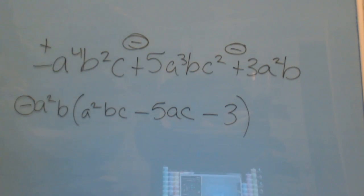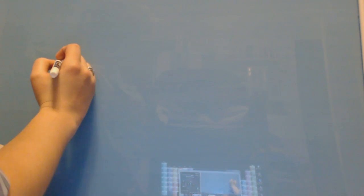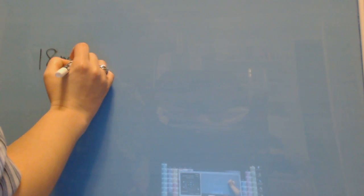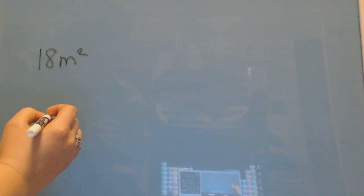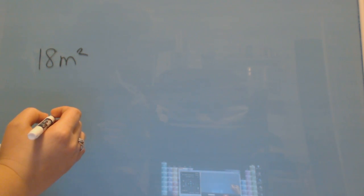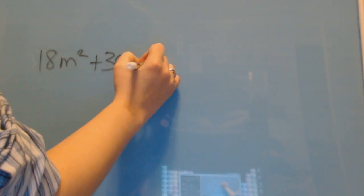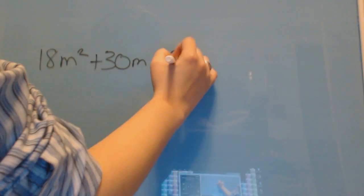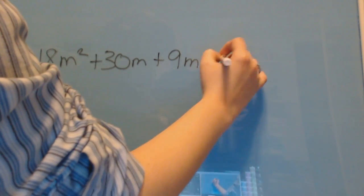So, moving on to one more problem. And this one is going to be the grouping, the factoring by grouping. Really super simple. We'll do 48. 48 looks pretty good to me. I'm happy with 48. So, 48 in section 5.4 says that it is 18m to the second. Plus 30m plus 9m plus 15.